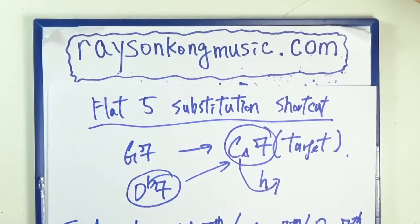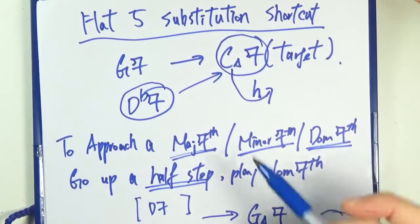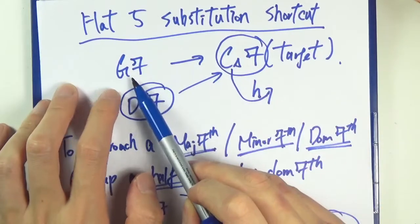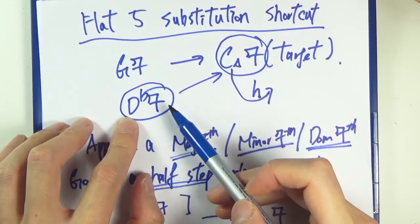In this video I'm going to elaborate on the flat five substitution shortcut. We talked a little bit about this in the last video. If you have a target chord called C major, instead of going from the five chord, which is the normal way of doing things, you go from the flat five sub chord, which is D flat seven.